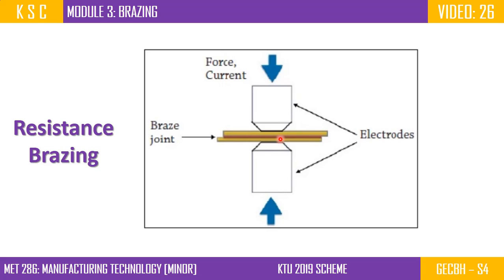The joint uses filler material. The electrodes apply compressive force. The current creates resistance heat. Once the heat grows, it melts the filler into the coil. This is resistance bracing. With resistance bracing, we don't need any separate type of flux — we use the same joint type.